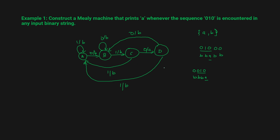You can also try the string 0 1 0 0 1 0. In state A: input 0 → go to B, output B. Input 1 → go to C, output B. Input 0 → go to D, output A — we encountered 0 1 0. Then input 0 → go back to B, output B. Input 1 → go to C, output B. Input 0 → go to D, output A — we encountered 0 1 0 again. So this is how we construct the Mealy machine that prints 'A' whenever the sequence 0 1 0 is encountered. I hope you got this concept. If you have any queries, feel free to ask in the comment section below. Thank you very much.